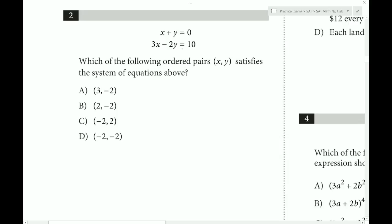Question 2. Here we have a system of equations to solve. The best way is by elimination method. We can double the top equation to get 2x plus 2y equals 0. Then we stack and solve. Adding the x's gives us 5x, and adding the y's cancels out. 10 plus 0 is 10. Dividing by 5, we get x equals 2.